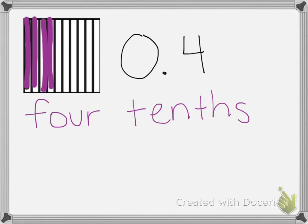Any time that we are describing part of a whole, we can also show that number using a fraction. So we always have a fraction that we can use to name our decimal. So we have 4 tenths, or 4 out of 10.